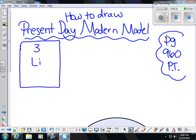The atomic number is 3. The atomic mass is 6.941. We need to find the number of protons, neutrons, and electrons before we can draw the model.